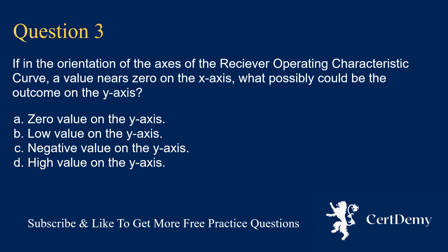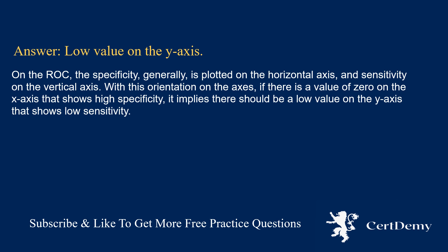Question 3. In the orientation of the axis of the receiver operating characteristic curve, if a value near 0 is on the x-axis, what possibly could be the outcome on the y-axis? The answer is: a low value on the y-axis.